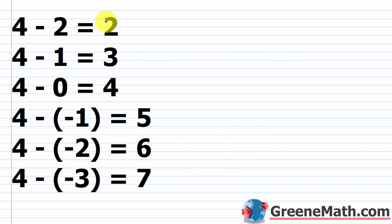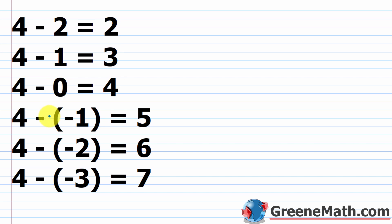You can see this with a pattern: 4 minus 2 equals 2, 4 minus 1 equals 3, 4 minus 0 equals 4. Each time the subtrahend decreases by 1, the result increases by 1 — because I'm taking one less away. So continuing the pattern: 4 minus negative 1 gives 5 (same as 4 plus 1); 4 minus negative 2 gives 6 (same as 4 plus 2); and 4 minus negative 3 gives 7 (same as 4 plus 3).